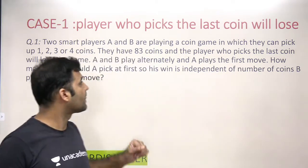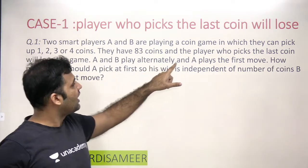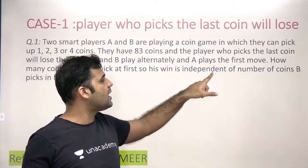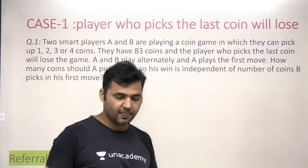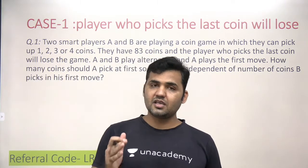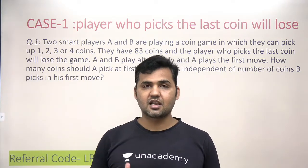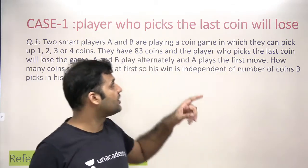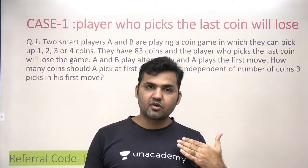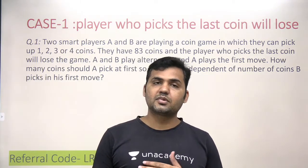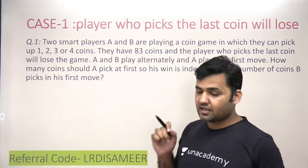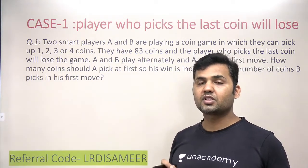A and B play alternately and A makes the first move. The question is: how many coins should A pick in his first move so that his win is completely independent of how many coins B picks? There are 83 coins on the table. A needs to pick a number in his first move such that ultimately B is left to pick the last coin and loses the game.